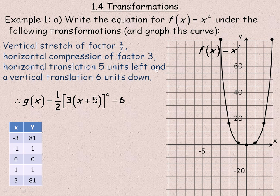The vertical translation moves the graph 6 units down, so we subtract 6 from the whole function. If the 6 were written over on the g of x side it would follow the same rule as the 5 units left — it would look opposite. So 6 units down means there's a minus 6 at the end of the function.